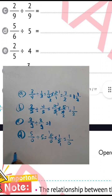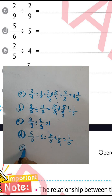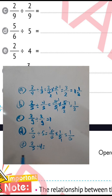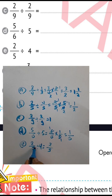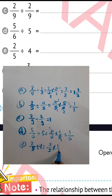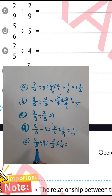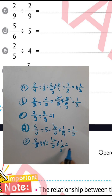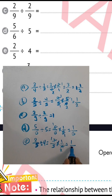Question letter e: 2 over 5 divided by 5 over 4. Write 2 over 5, convert from division to multiplication, and raise the inverse of 5 over 4 to get 1 over 4. Simplify: 2 divided by 2 equals 1, 4 divided by 2 equals 2. Then 1 times 1 equals 1, and 2 times 5 equals 10, giving the result 1 over 10.